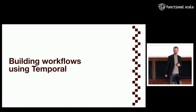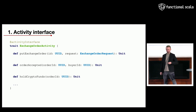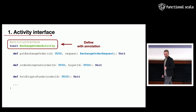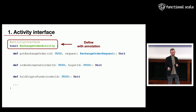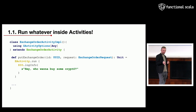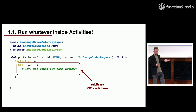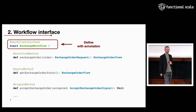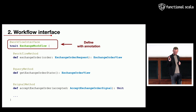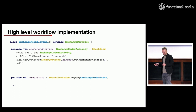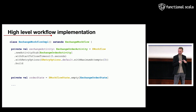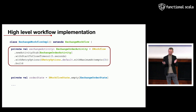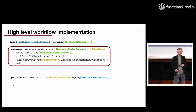How do we actually build our workflows using Temporal and Scala? We start by defining an activity interface — a regular Scala trait with methods. The main requirement is that this trait must have an ActivityInterface annotation. When implementing this activity, you are allowed to run arbitrary ZIO code inside, in this case just simple logging. For the workflow interface, you define a trait with the WorkflowInterface annotation and define the three main parts: workflow method, query method, and signal method.